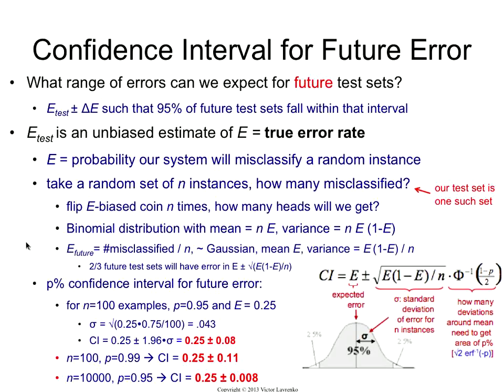So the confidence interval, the final confidence interval, is 25% plus or minus 8%. So what this means is that if this was our testing set, then on the future testing sets, assuming that we sampled in an unbiased way, assuming that our testing set is somehow representative of what we'll see in the future, we will see the error which is somewhere between 17% and 33%. So somewhere in that bracket, there will be 95% of the future test sets.